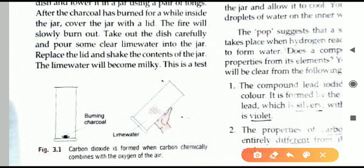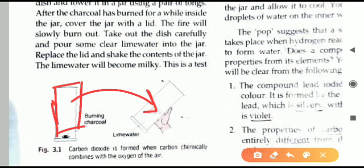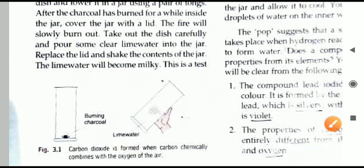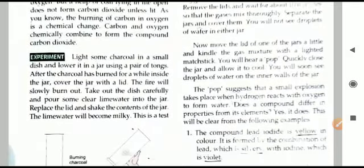CO2 gas is produced because of the burning of charcoal, and it collects inside the jar. We put lime water into the jar where CO2 is present. Lime water and CO2 react with each other, and as a result the lime water becomes milky — it appears whitish in color. This is a test: if lime water becomes milky, we can say the gas is CO2. If lime water does not turn milky, it is not carbon dioxide.